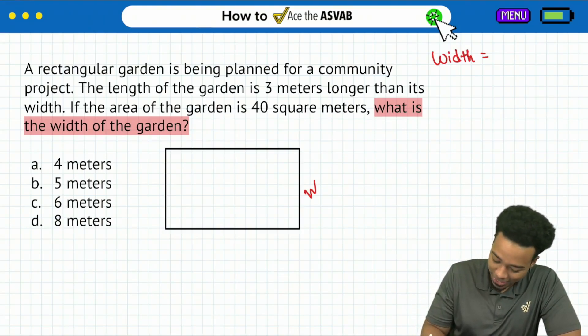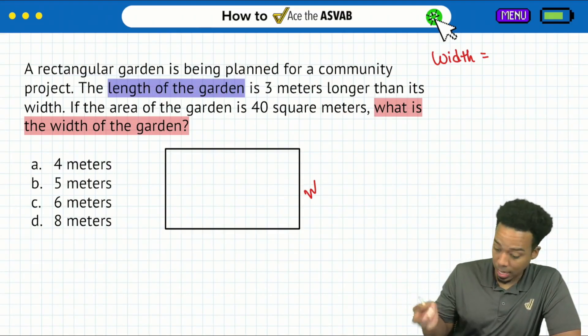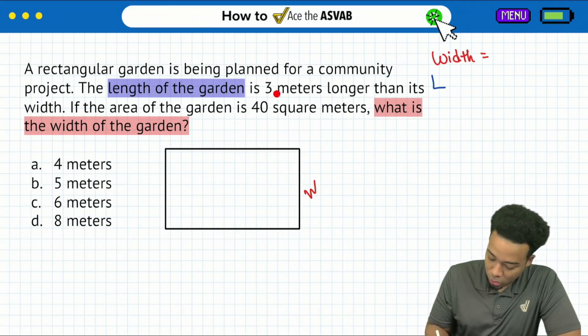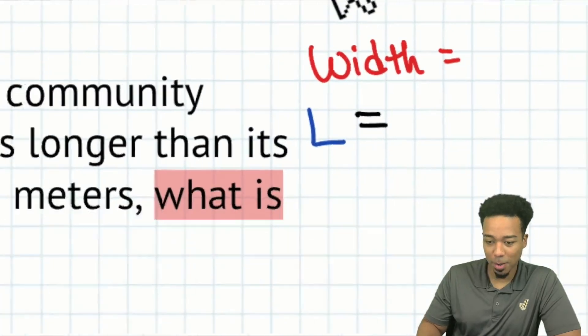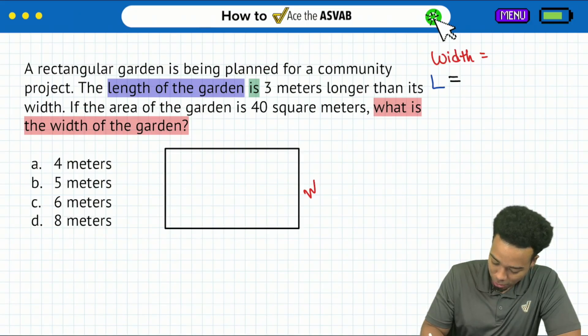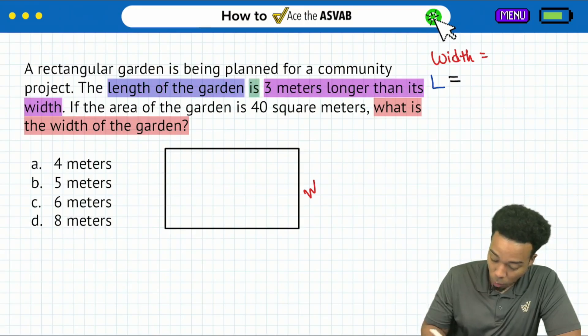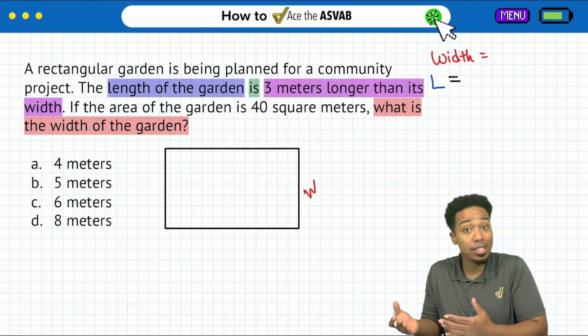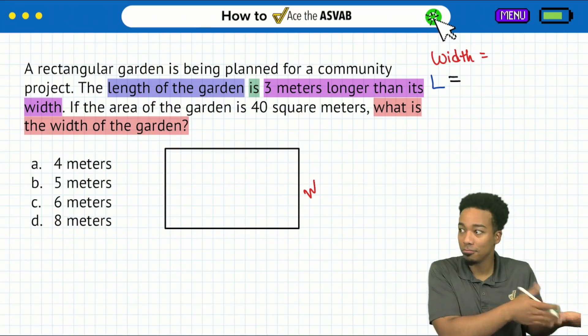So first thing right over here, I see that it says the length of the garden. So I'm going to write the length of the garden. And then it says is three meters longer. So is, that's a key word right there. So equals pay attention right up here. So is three meters longer. Let's use a different color here. Three meters longer than its width.